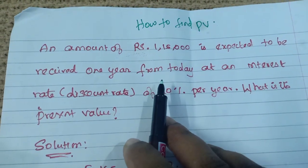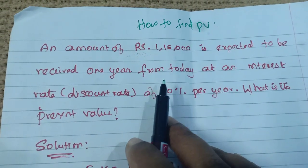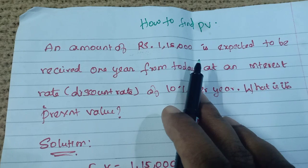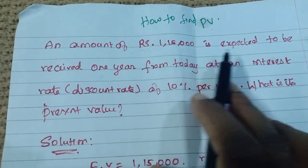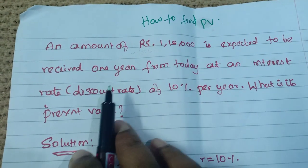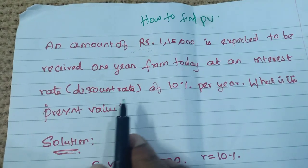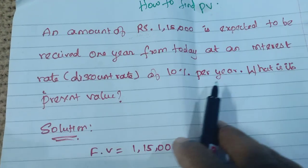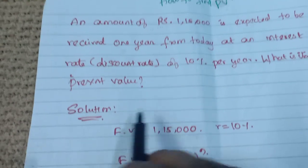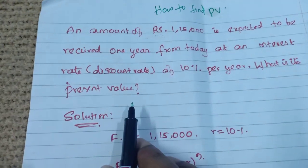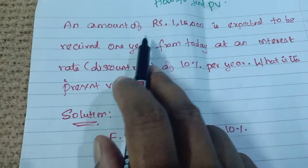Hello friends, welcome to Gym Academy. Now I am going to discuss how to find the present value. An amount of rupees one lakh fifteen thousand is expected to be received one year from today at an interest rate of 10% per year. What is the present value? We need to find the present value.